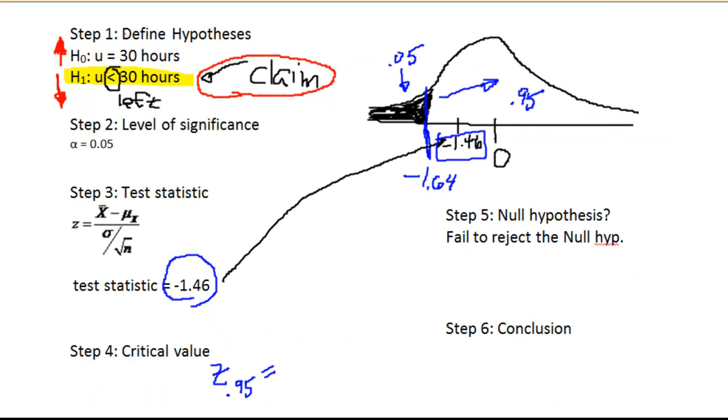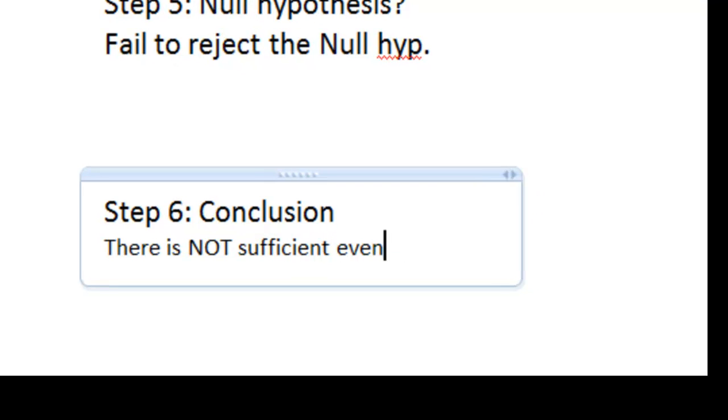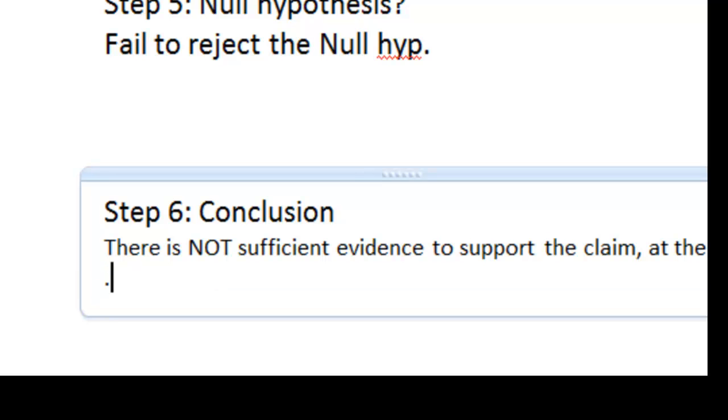So, my final step then, in step six, is going to be that there is not sufficient evidence to support the claim. I can't just stop there, I have to be a little more specific. At the .05 level of significance, that's important because if it wasn't .05, if it was 10%, the result might be different. So, I do not have enough evidence to support the claim at the .05 level of significance. That's where I'm going to stop, it's as much as I need to state.